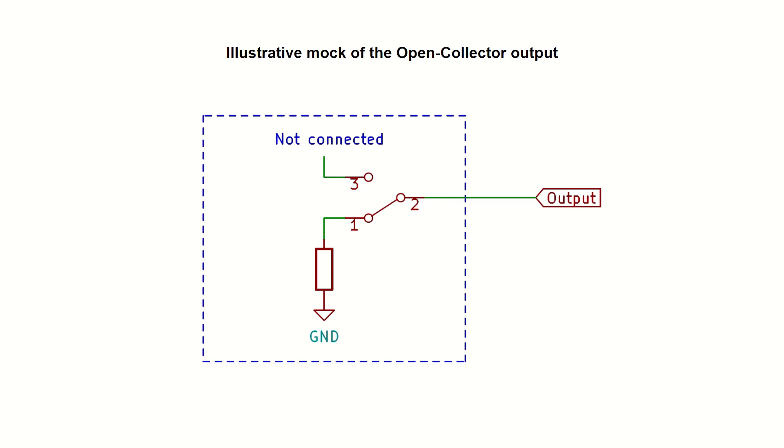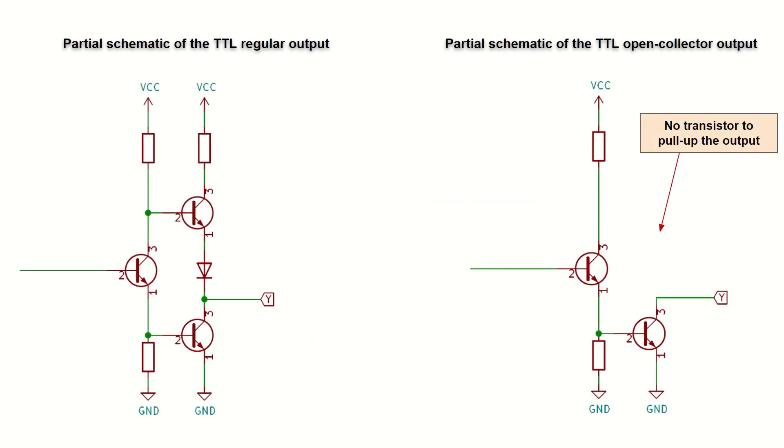The name open collector comes from the original TTL series, which used the BJT transistors. The regular gate has two transistors at the output, where either the top one or the bottom one is switched on, giving the logical 1 and 0 respectively. This output has only the bottom transistor, which is switched off for logical 1, leaving its collector effectively unconnected or open.